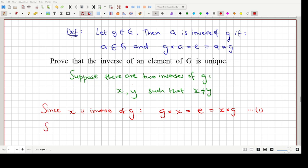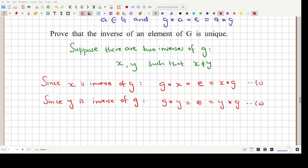Again, since Y is inverse of the element G, we can write G star Y is equal to E which is equal to Y star G. This looks like two equations but there are indeed a lot of relations that we can define based on these two equations.